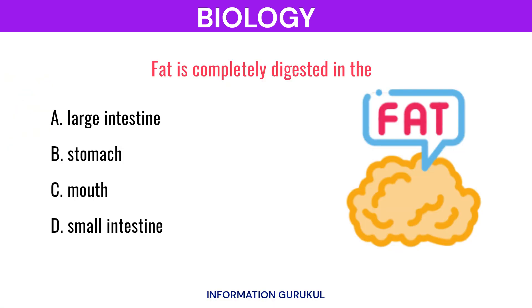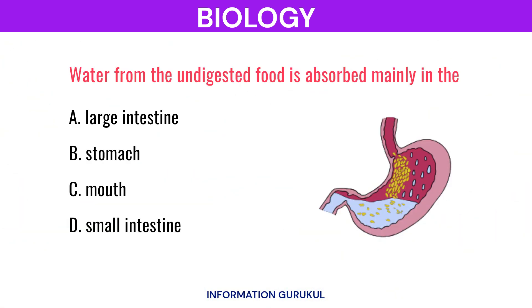Fat is completely digested in the Small intestine. Water from the undigested food is absorbed mainly in the Large intestine.